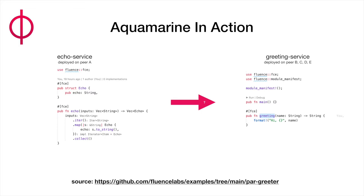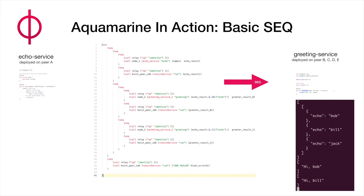Then we have a greeting service. The greeting service takes a name, which is a string. Let's say the greeting services are deployed on different peers — multiple peers. So how do we go from the echo service to the greeting service? We do this with Aquamarine. The services are the same, just made very small. Now we build an Aquamarine AIR script. Don't be afraid of the parentheses — once Aqua comes along, you won't have to deal with them.